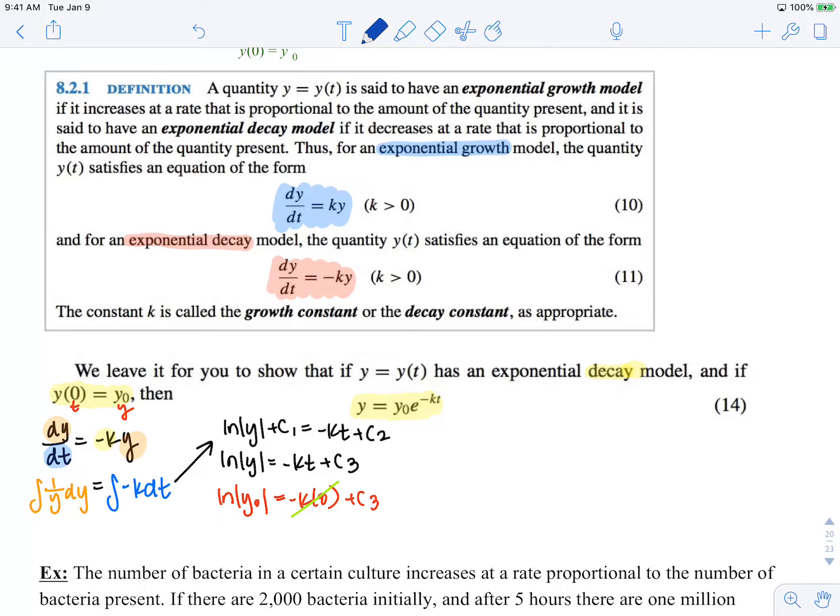Going back to our problem, we have ln absolute value of y equals negative kt plus ln absolute value of y0.